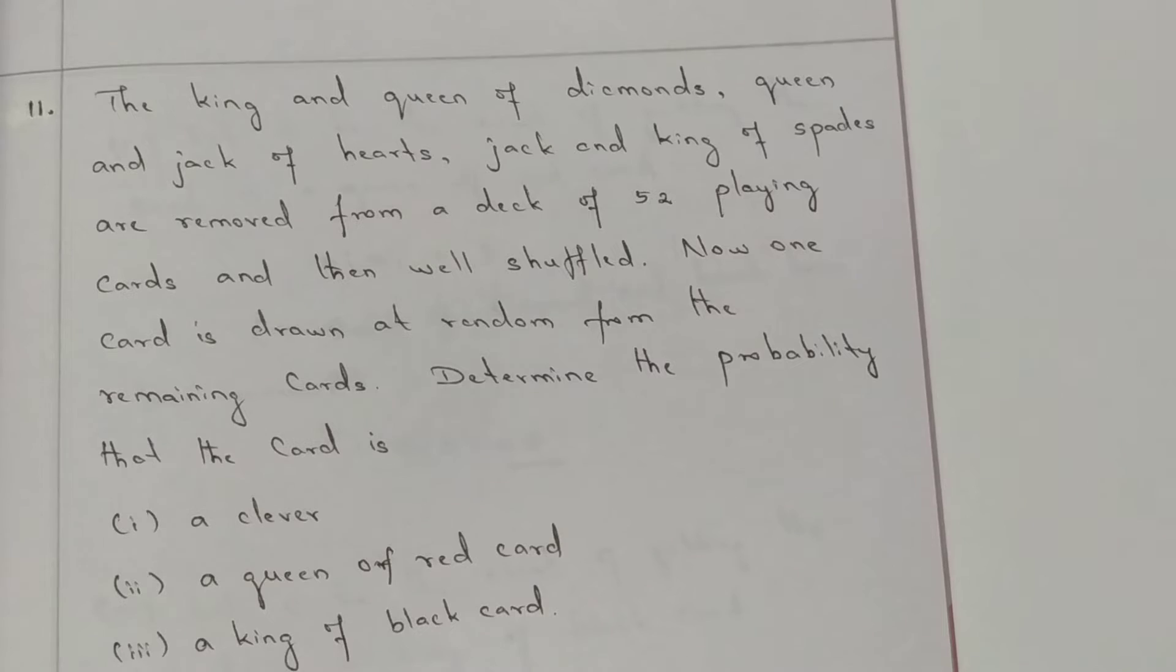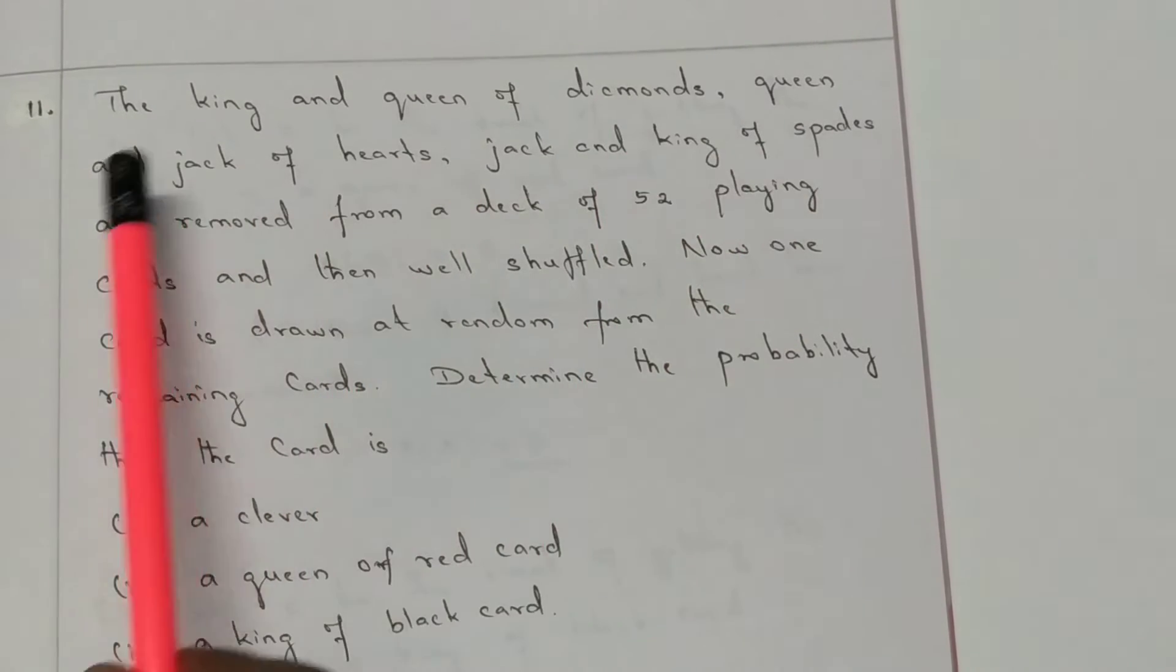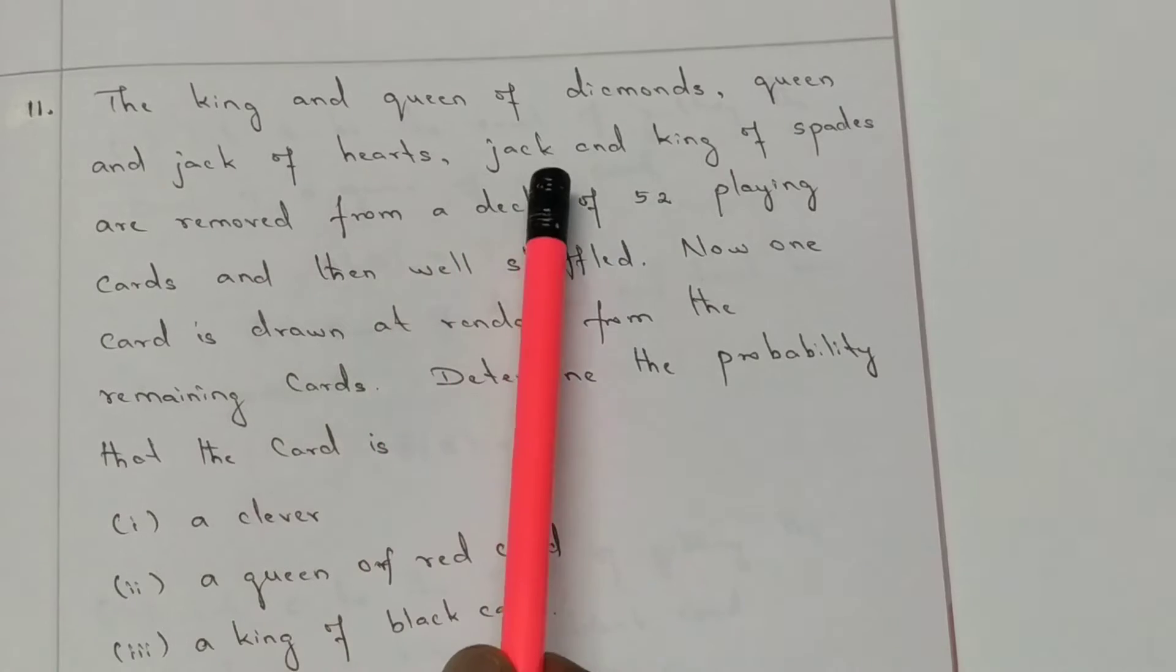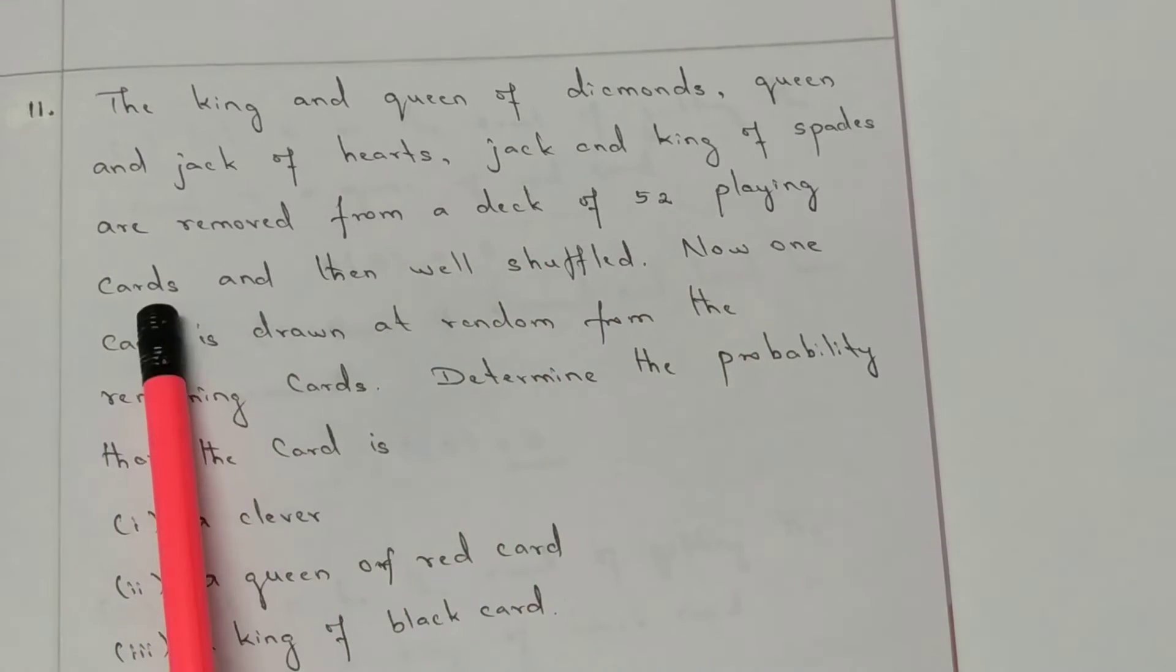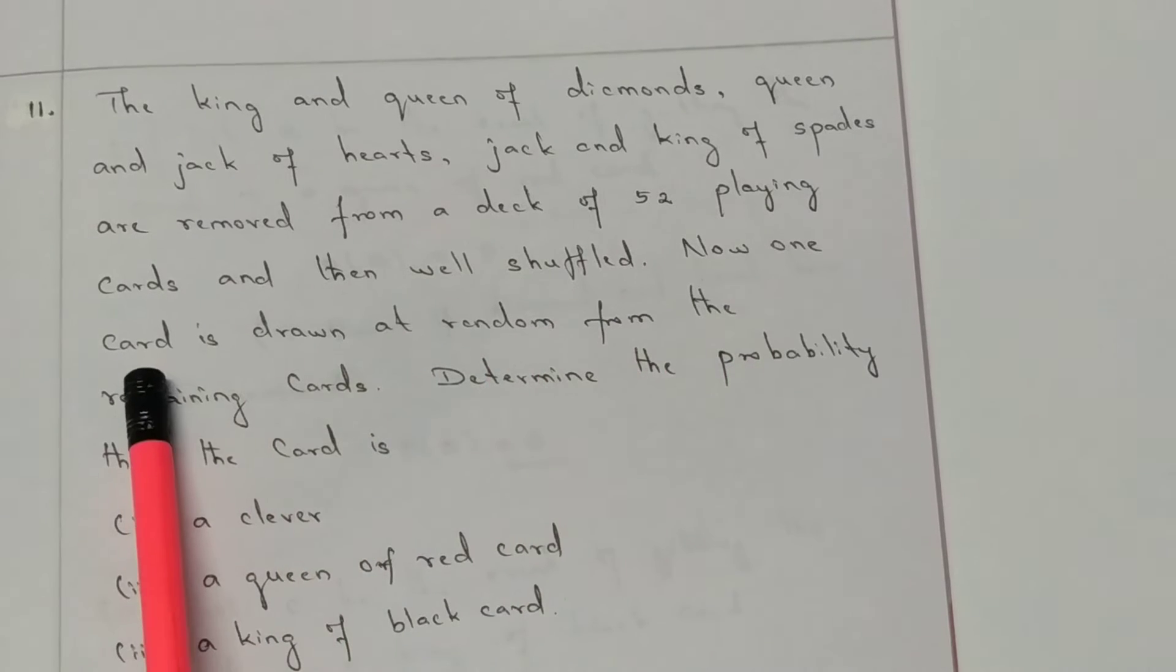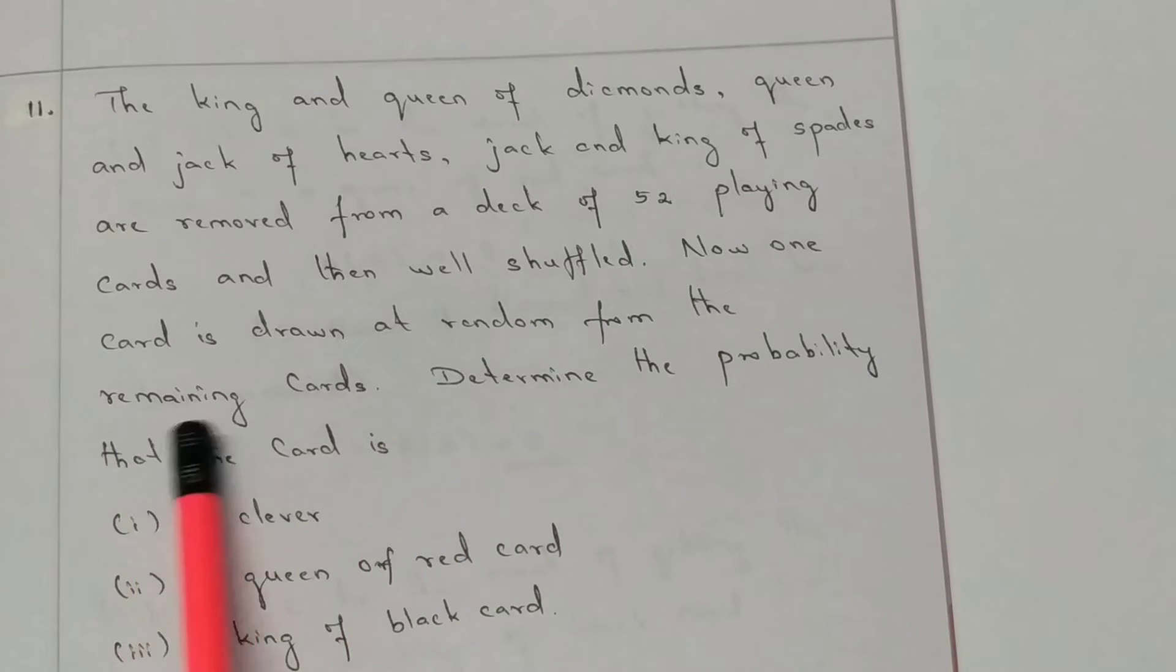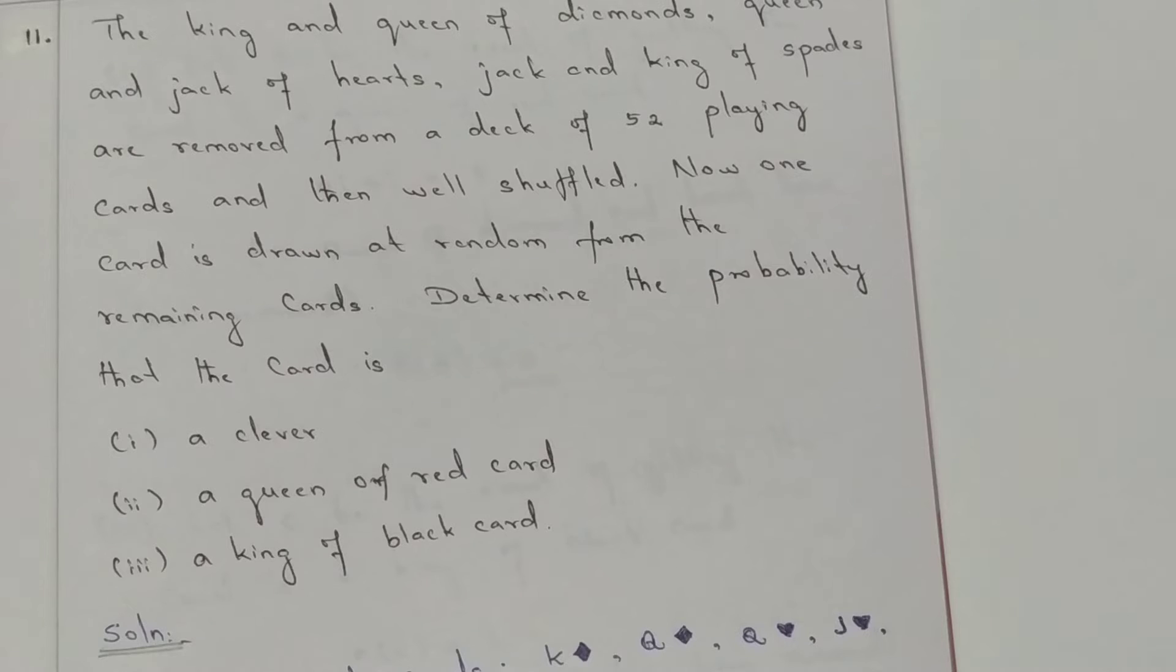Exercise 8.3. The King and Queen of Diamonds, Queen and Jack of Hearts, Jack and King of Spades are removed from a deck of 52 playing cards and then well shuffled. Now one card is drawn at random from the remaining cards. Determine the probability that the card is: (i) a Club, (ii) a Queen of Red card, (iii) a King of Black card.